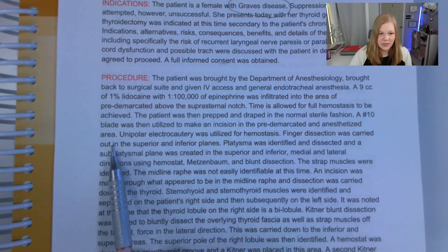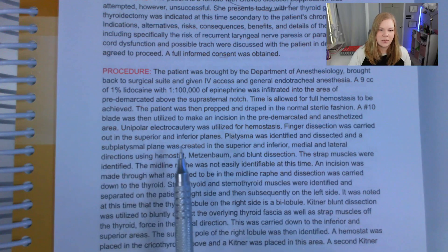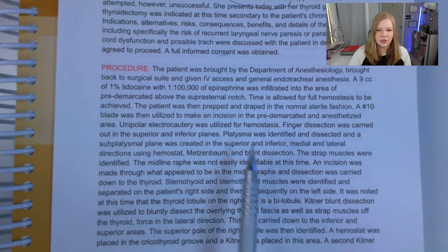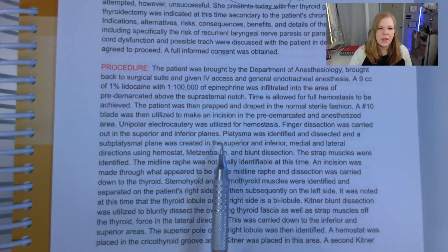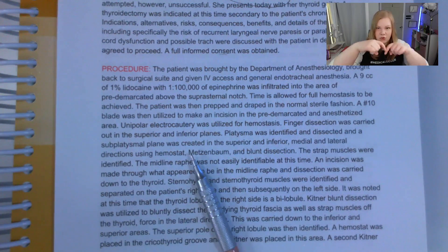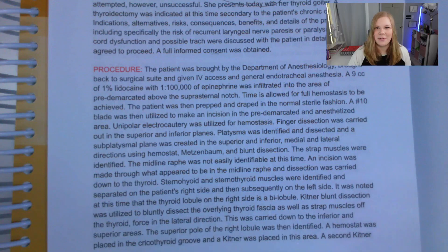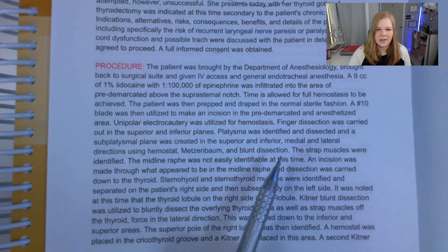Finger dissection was carried out into the superior and inferior planes. The platysma was identified and dissected, and a subplatysma plane was created in the superior, inferior, medial, and lateral dissections using hemostat, Metzenbaum, and blunt dissection. The platysma is that area of your neck between the jaw and the collarbone. Blunt dissection means using a blunt instrument or even a finger to separate tissue — kind of like pulling the skin from underneath a turkey using your finger.